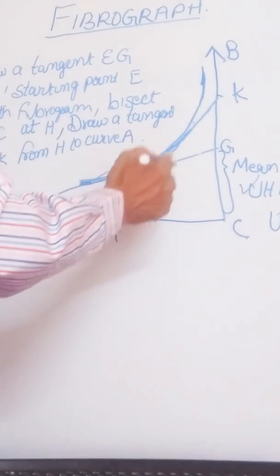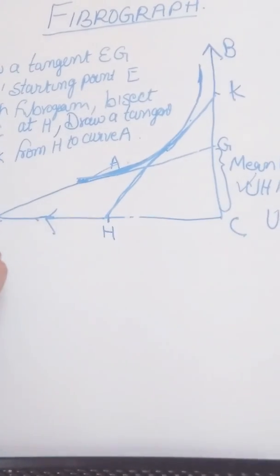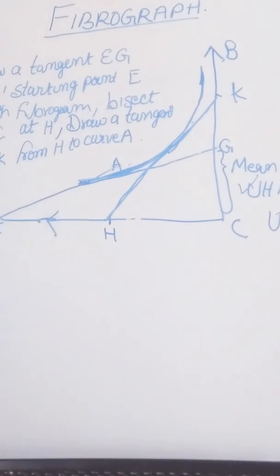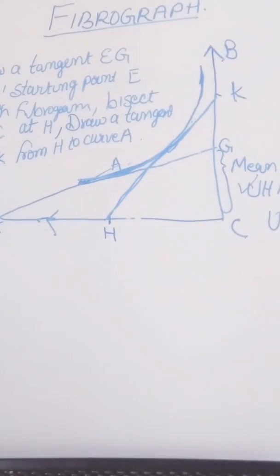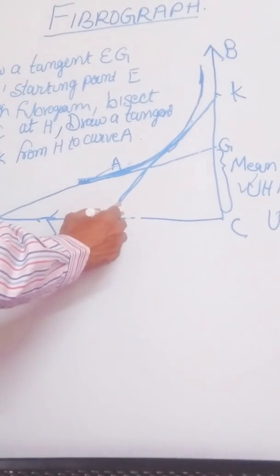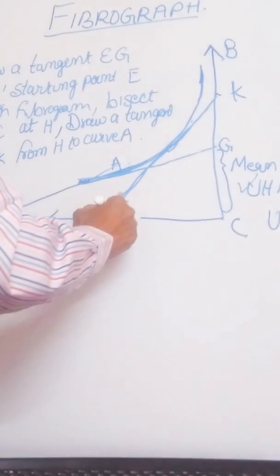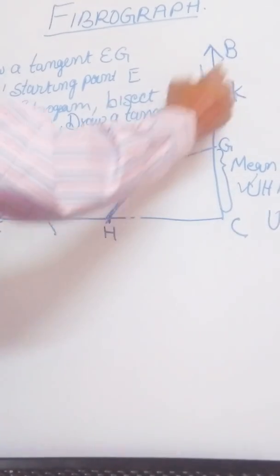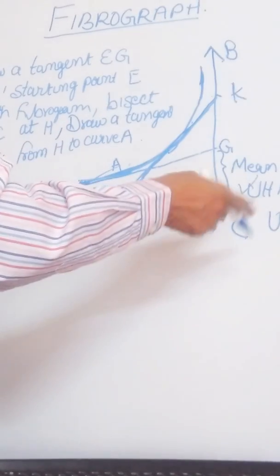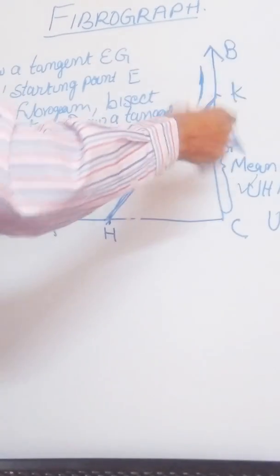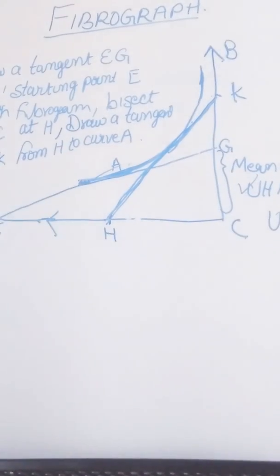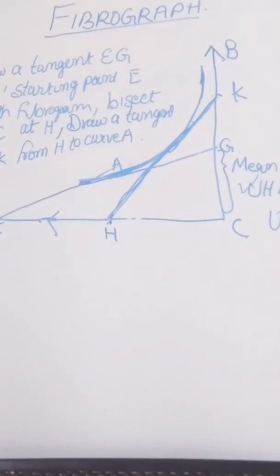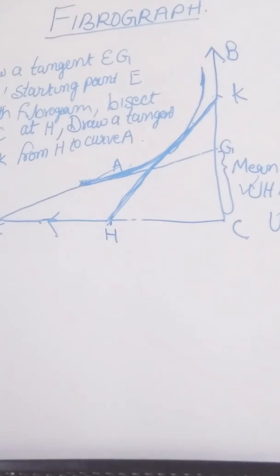And then we bisect the EC at a point H, and then a tangent is drawn which touches the BC at K. So CK is the upper half mean length. And from that we can calculate the uniformity ratio.